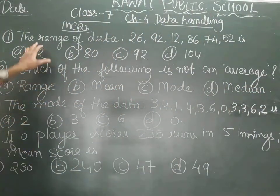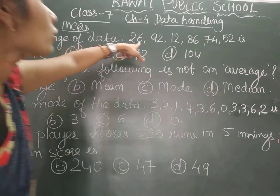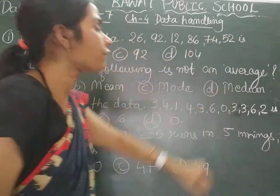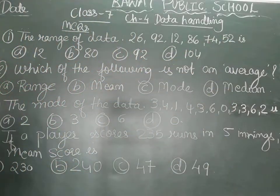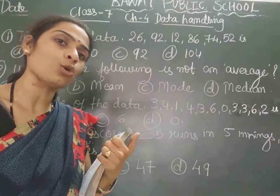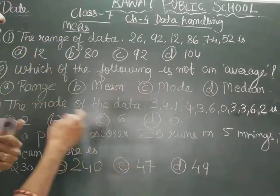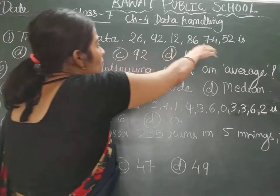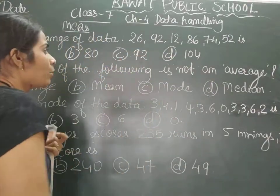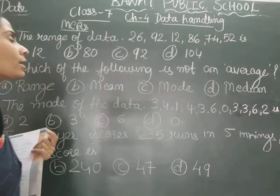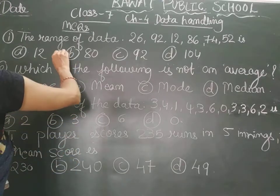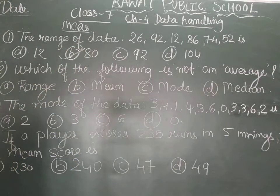The first question says: the range of the data 26, 92, 12, 86, 74, and 52 is? What do you mean by range? Range is the highest observation minus the lowest observation. Anna, in this observation, which is the highest one? Yes, it is 92, and which is the smallest one? That is 12. So, 92 minus 12 will give you 80. So, the range is 80.